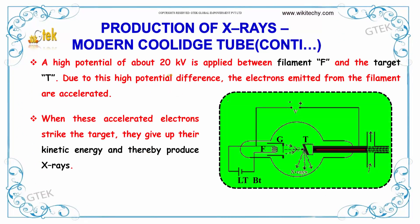A high potential of about 20 kV is applied between the filament and the target. Due to this high potential difference, the electrons emitted from the filament are accelerated. When these accelerated electrons strike the target, they give up their kinetic energy and X-rays are produced.